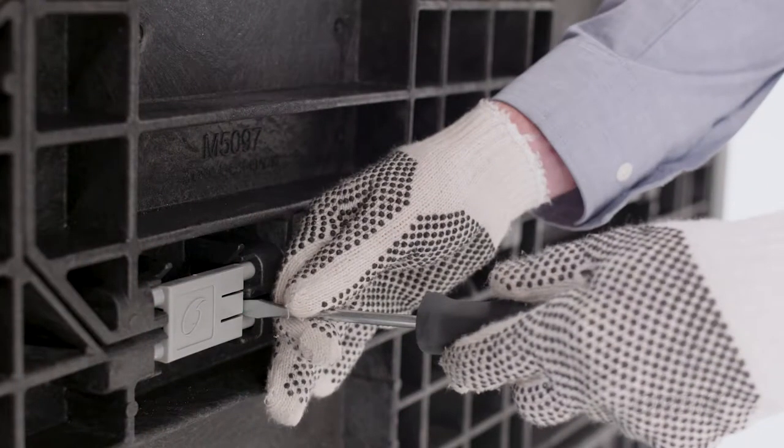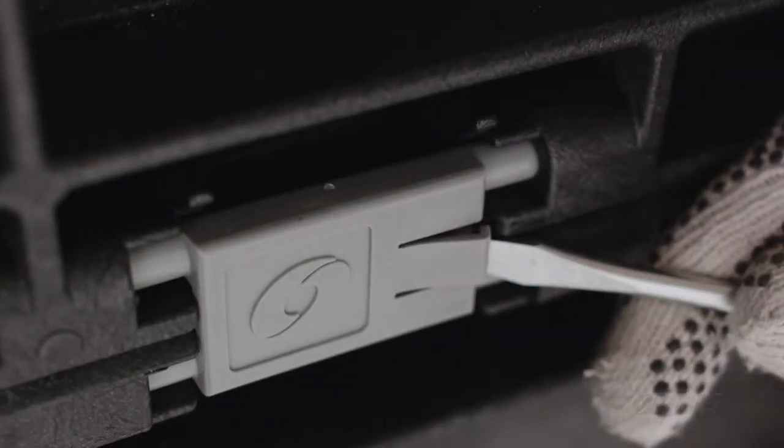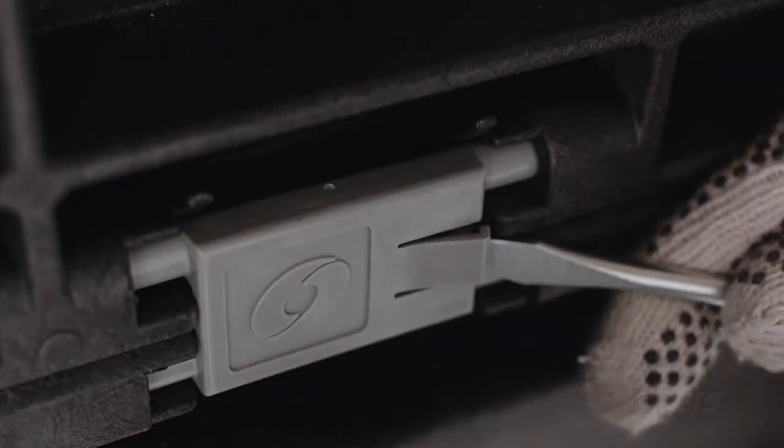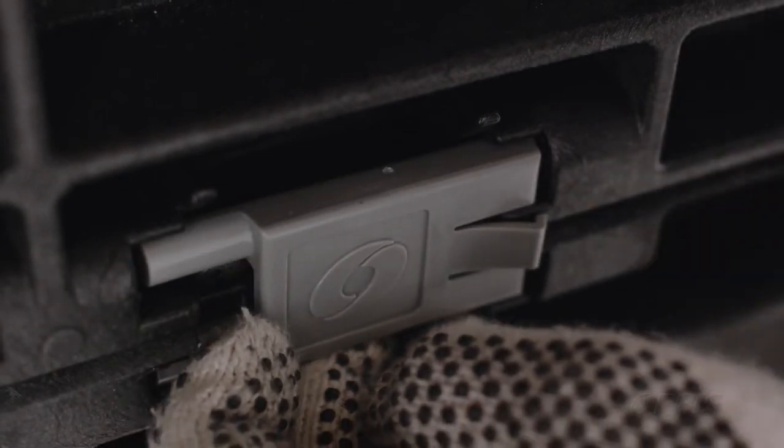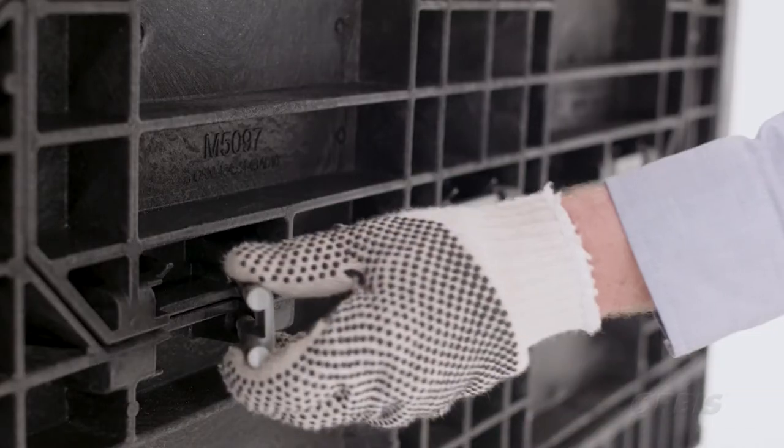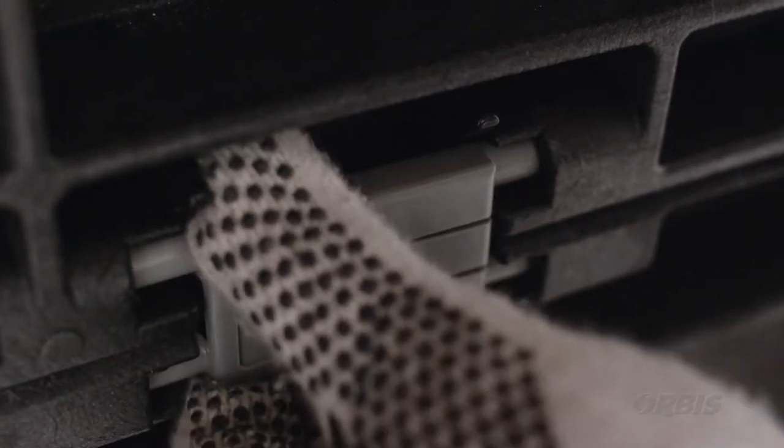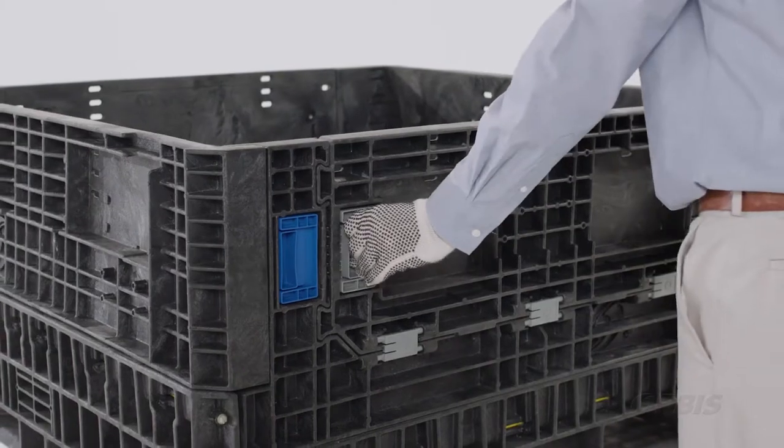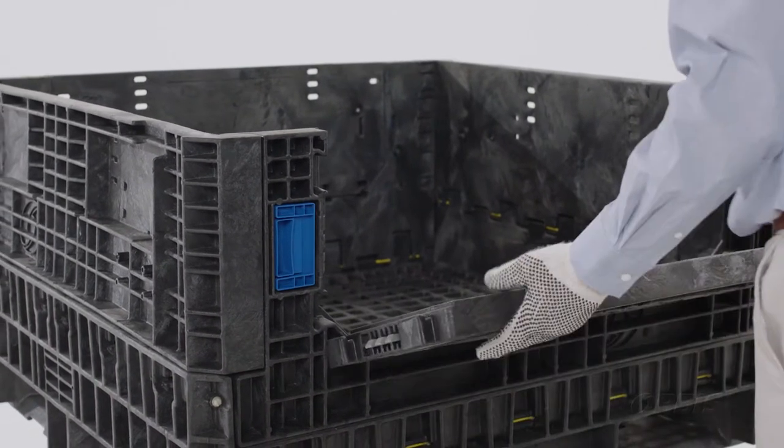Insert the flathead screwdriver under the tab of the hinge. While pulling up on the tab with the flathead screwdriver, slide hinge over to remove. Insert new hinge into the correct location of the hinge. Open and close the access door to ensure correct fit.